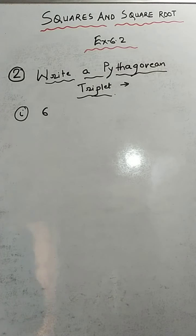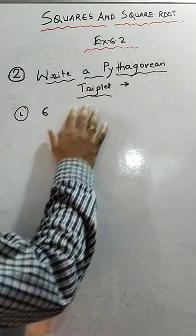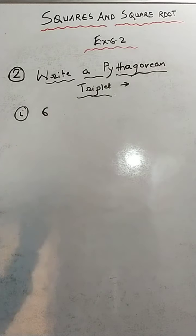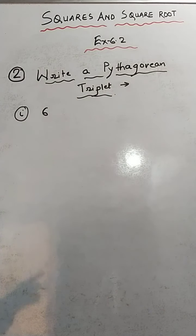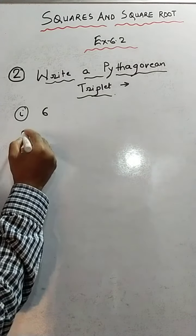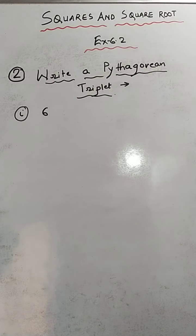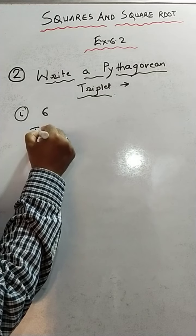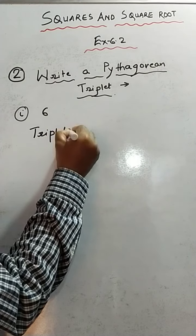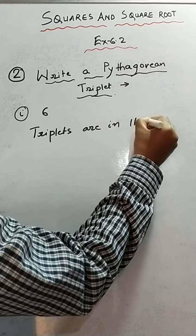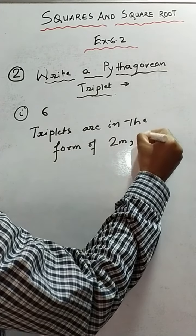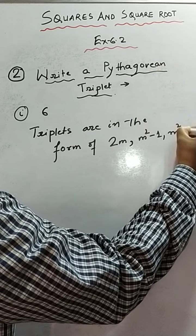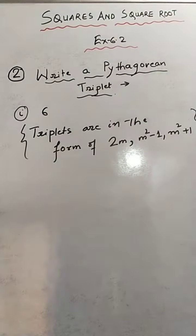In question number 2, we have to write a Pythagorean triplet where the first number is given as 6. Remember, a Pythagorean triplet is a combination of 3 numbers, and all 3 numbers should be integers. The triplets are always in the form of 2m, m²-1, and m²+1.